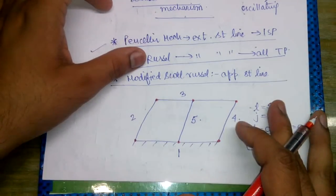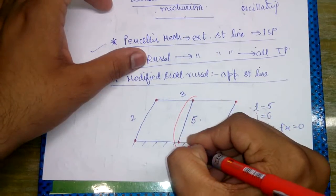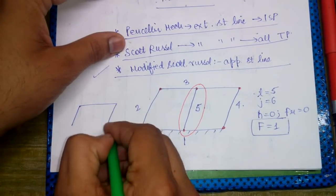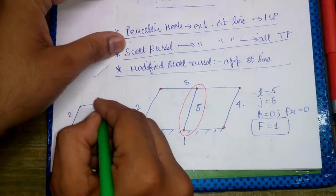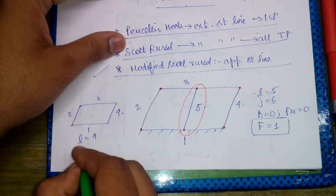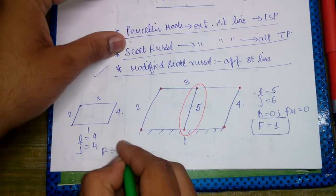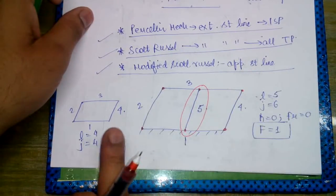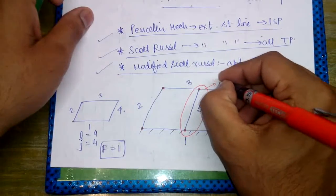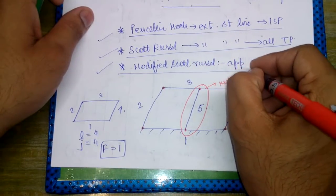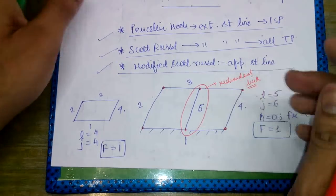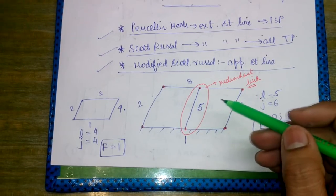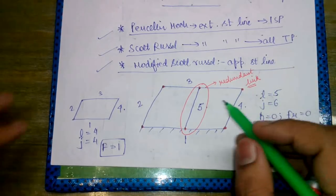One very important feature: if we remove link 5, then we have links 1, 2, 3, 4 — number of links = 4, number of binary joints = 4, and the degree of freedom still comes out to be 1. This means that even after removal of this link we obtain the same degree of freedom. Hence this link is called the redundant link. Even after removal of the redundant link, degree of freedom remains 1.